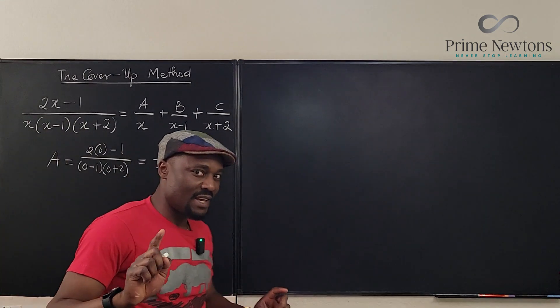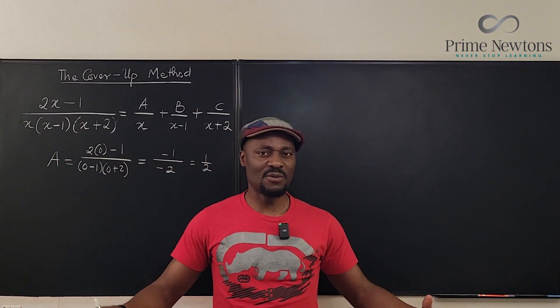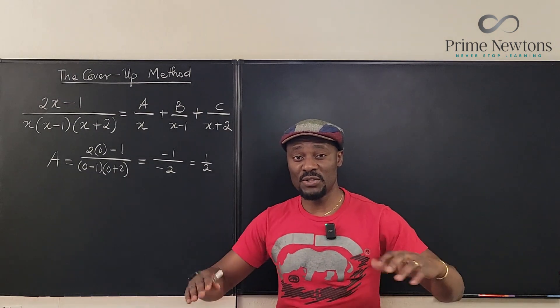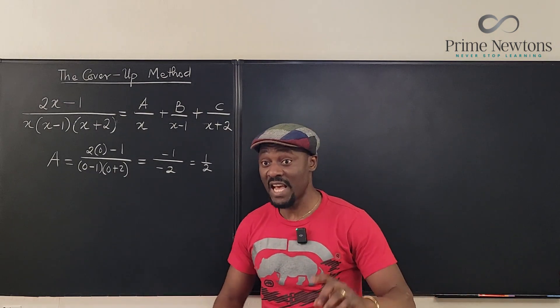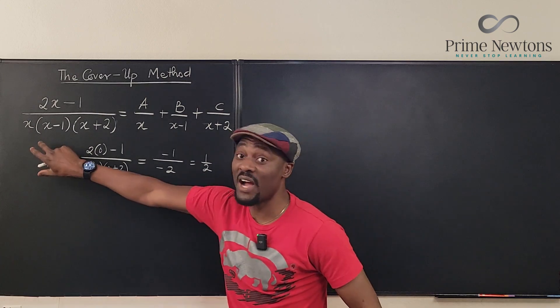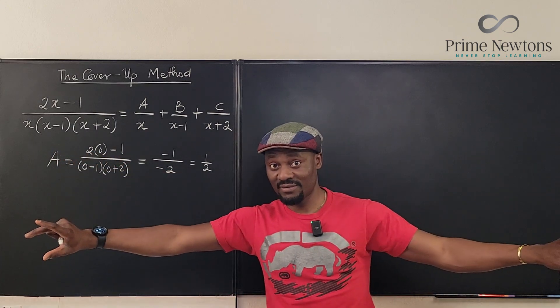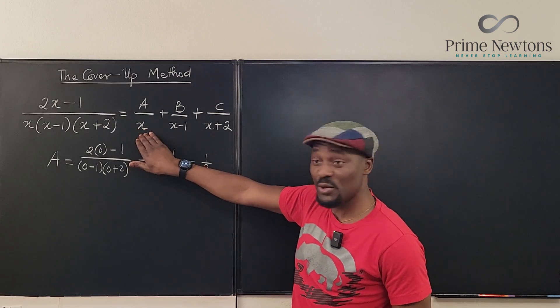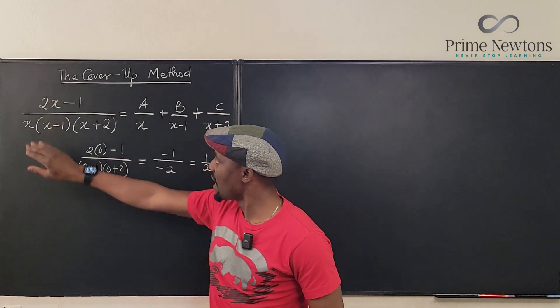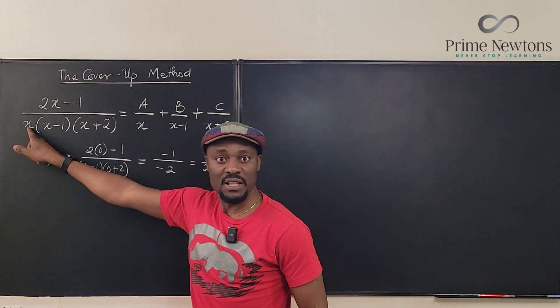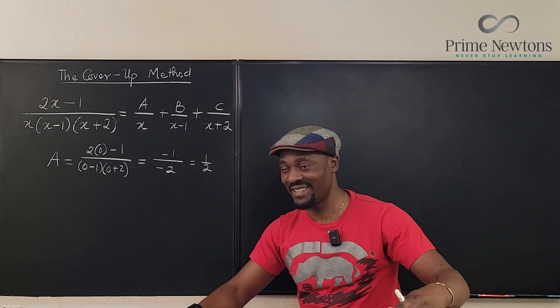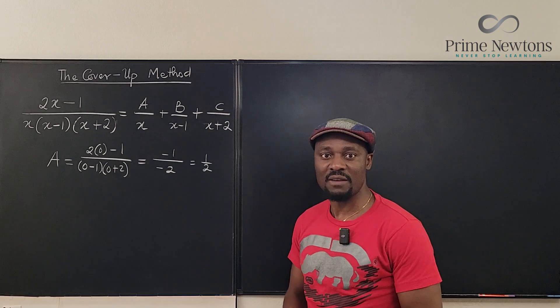Now you might say well isn't that exactly what we do whenever we do the normal choose a good number to substitute to eliminate everything else. Yes but that one you have to first write out an equation. In this case you don't need to write an equation. Just look at the number you don't want. Go plug it in and avoid that same term in the side. So here I got my A. I'm gonna show you how it works in practice. So we will get A equals 1 half.